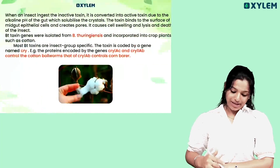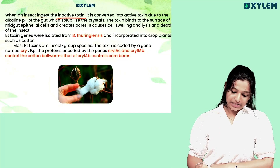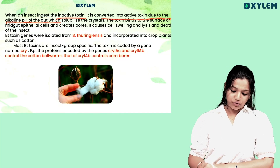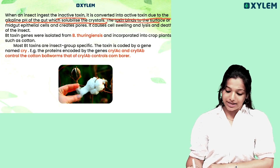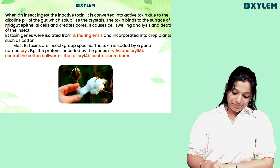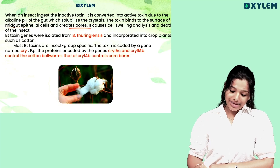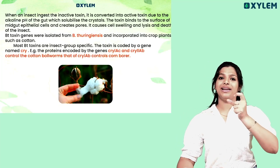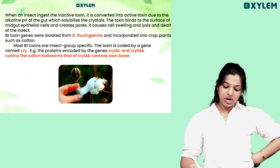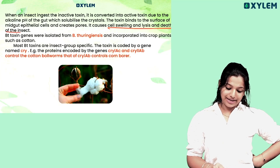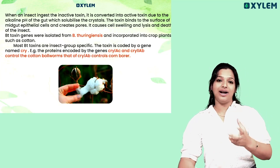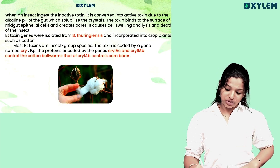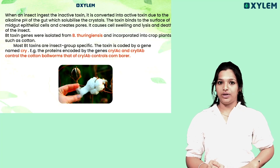Insects ingest the inactive toxin. It is converted into active toxin due to the alkaline pH of the gut, which solubilizes the crystals. The toxin binds to the surface of the midgut epithelial cells and creates pores, causing swelling, lysis, and death of the insect. BT toxin genes were isolated from Bacillus thuringiensis and incorporated into crops such as cotton.